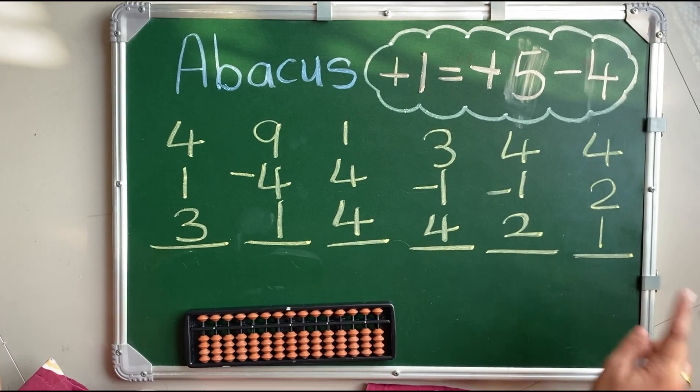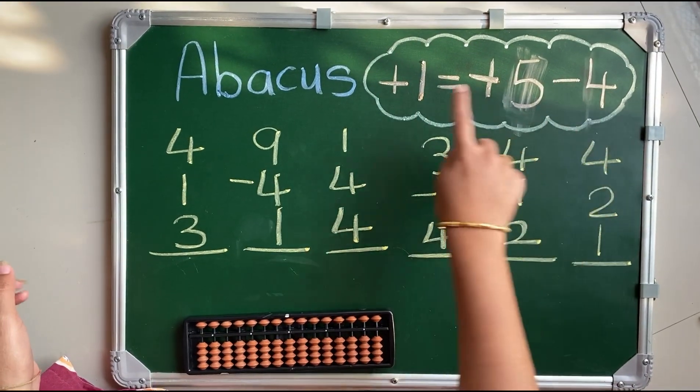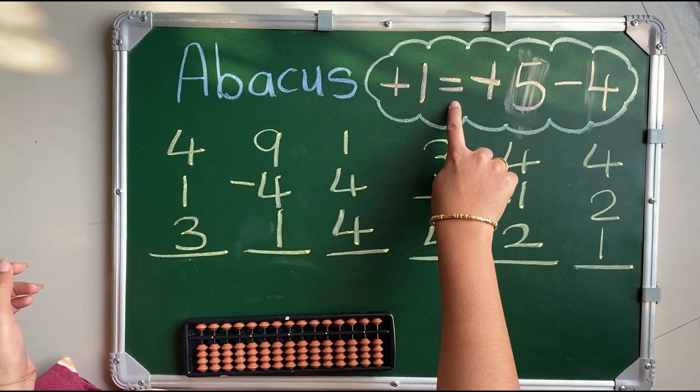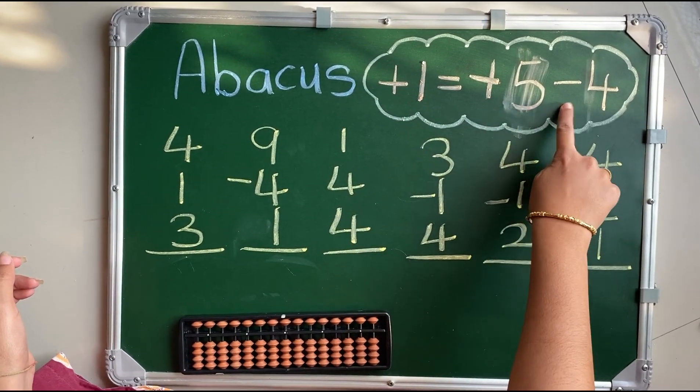So, today we are going to solve this small friend concept that is plus 1 is equal to plus 5 minus 4.